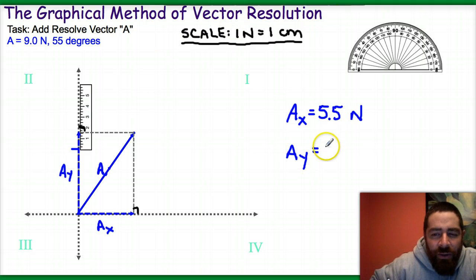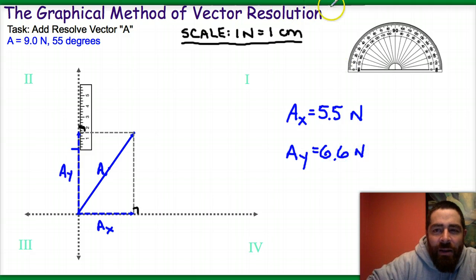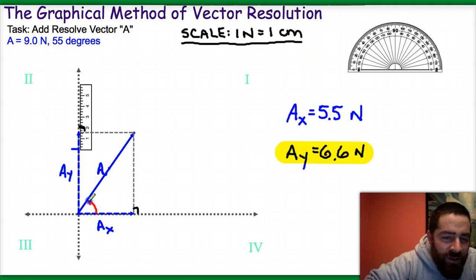We expect the y-component here to be larger than the x-component, and that's because the angle theta is greater than 45 degrees. It's 55 degrees. It's slightly more than 45, so therefore, the y-component will be larger than the x-component.